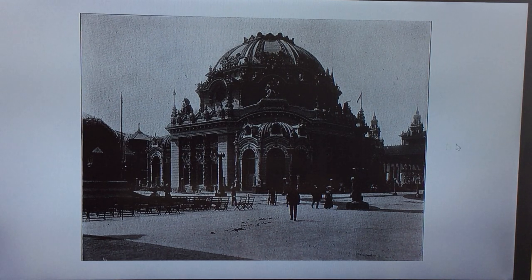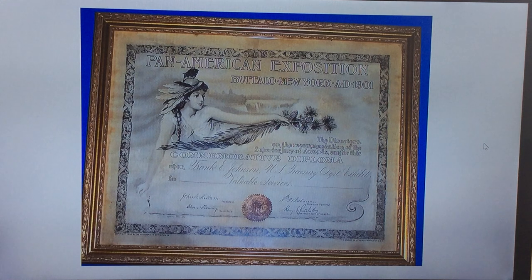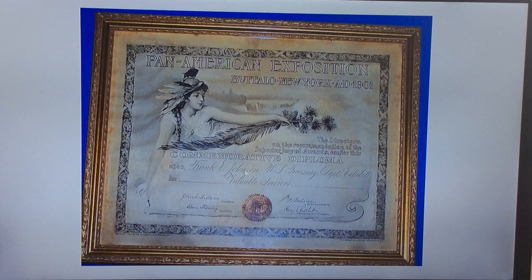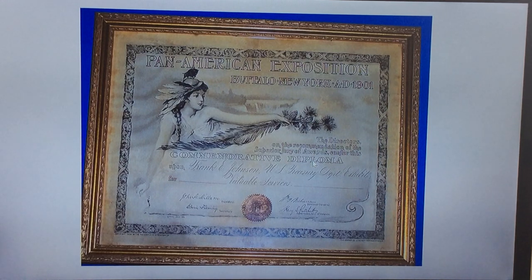There's also this very strange certificate — the Pan-American Exposition, Buffalo, New York, A.D. 1901. It's notable they had to put 'A.D.' in there, in case you're confused about whether it's from 1901 B.C. It's a commemorative diploma — 'the directors on the recognition of the superior jury of awards confer this commemorative diploma.' You have to wonder what sort of university-course-type thing was going on in the middle of this fair where people could get diplomas.